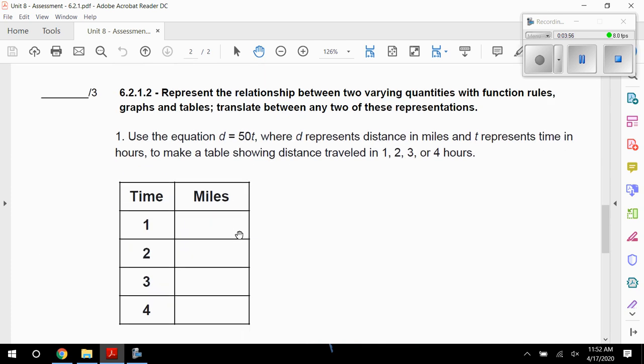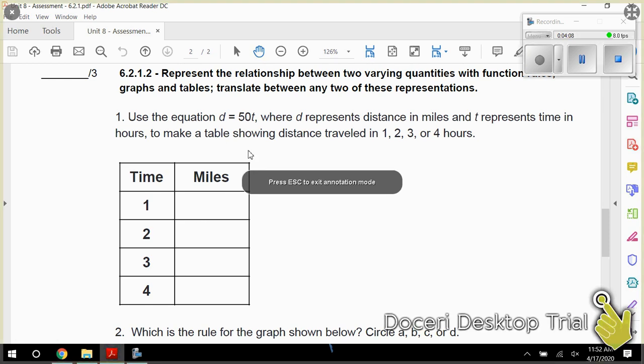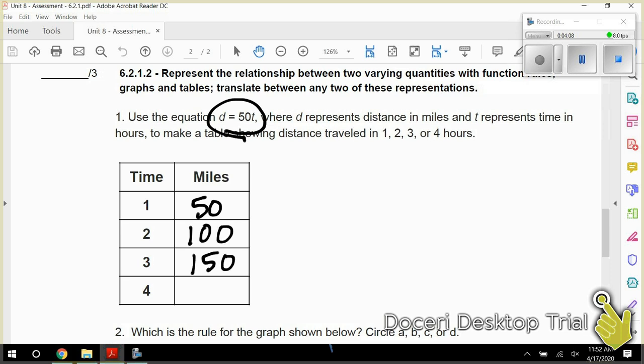Front side of the paper is done. Now the back side asks us to complete this table. We're plugging in 1, 2, 3, and 4 for time. Our formula that we're using is right here. So we're doing 50 times T equals D. So 1 times 50 is 50, 2 times 50 is 100, 3 times 50 is 150, and 4 times 50 is 200. So that's how you're going to fill out number 1 for 6.2.1.2.